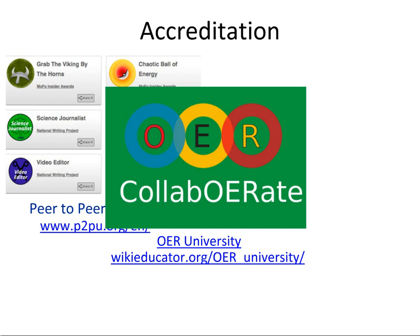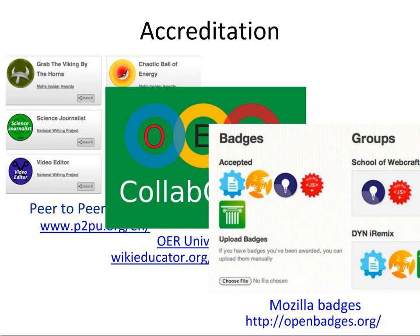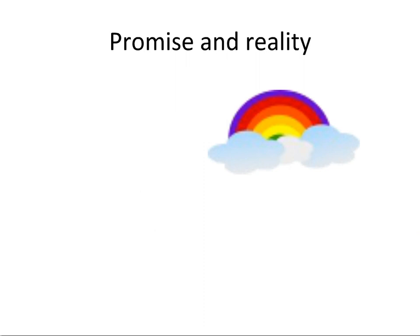The final component is accreditation. Three examples: the peer-to-peer university approach; the OER university headed by Wayne McIntosh from New Zealand, now an international consortium of institutions worldwide where learners can choose to learn any way they want and when ready go to a member institution such as UNISA in South Africa or Athabasca in Canada to get accreditation. Different learners will want different needs — a 55-year-old retired woman learning Spanish is very different from an 18-year-old in India wanting a qualification in the computer industry. And finally, the notion of badges, which we adapted from Mozilla badges in the OLDS Learning Design MOOC and put into a social networking site called Cloudworks.